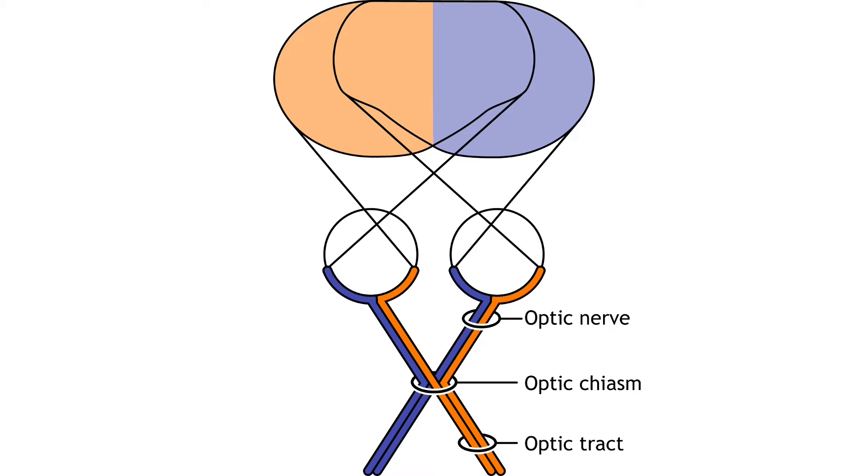Visual information from each eye leaves the retina via the ganglion cell axons at the optic disc, creating the optic nerve. Prior to entering the brain, axons from the nasal portion of each retina cross the midline at the optic chiasm.